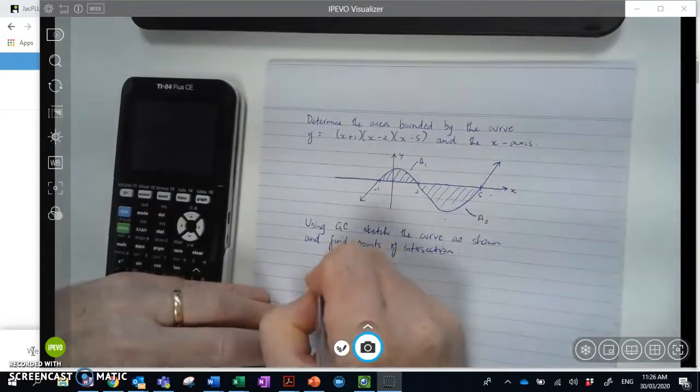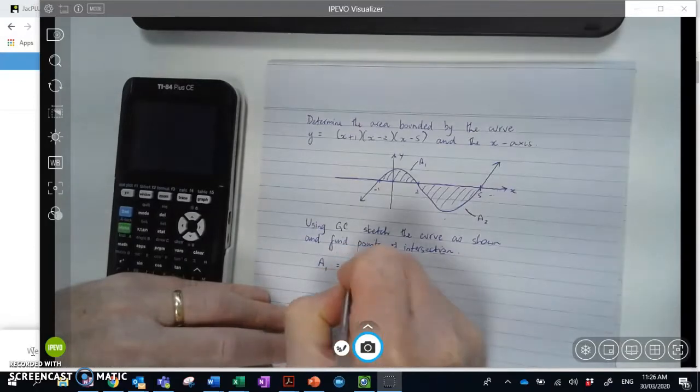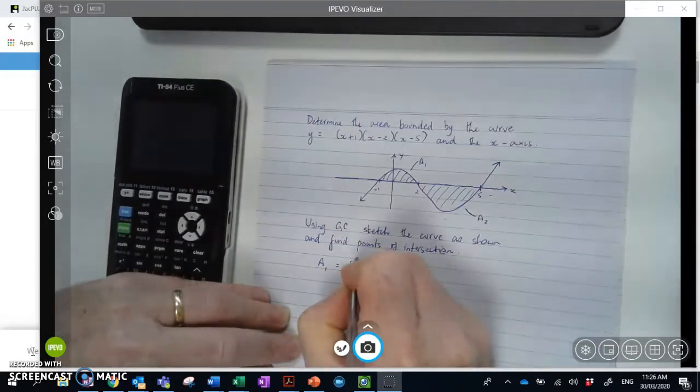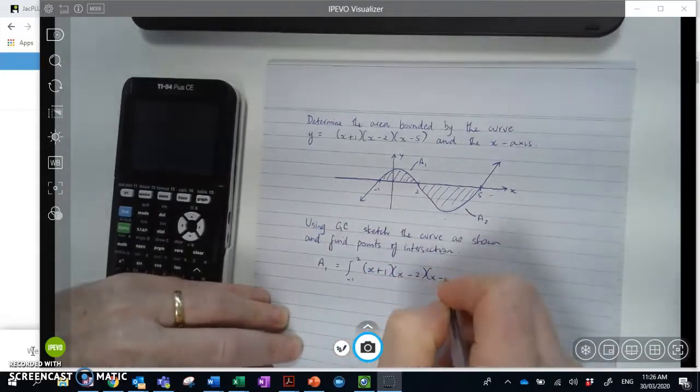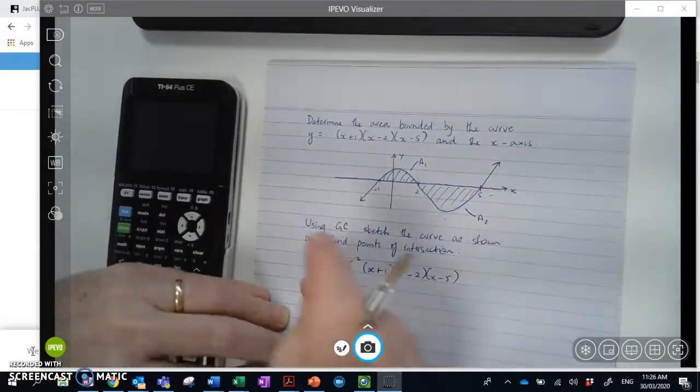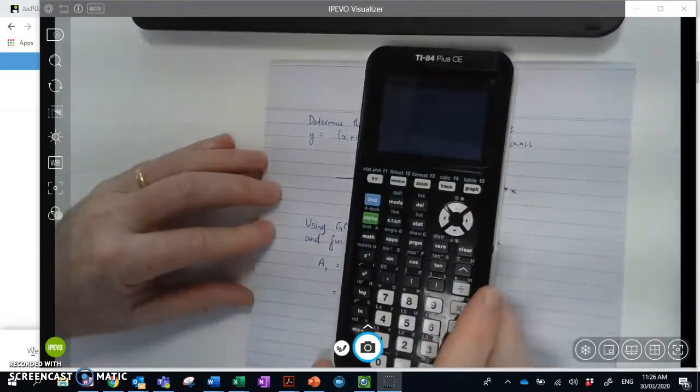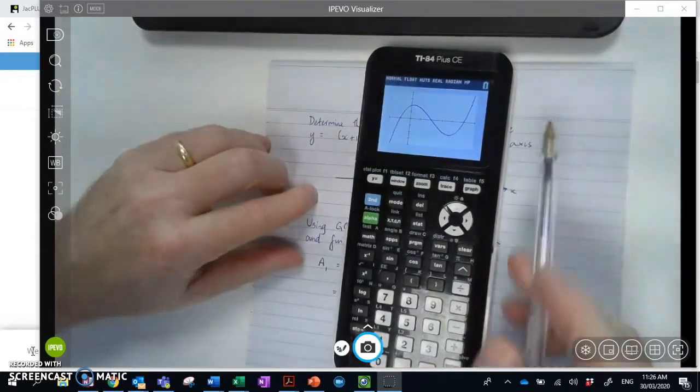And then what we're going to do is we're going to say let's go area 1 as the integral from negative 1 to 2 of this equation, (x+1)(x-2)(x-5). And then we can just place that into the calculator. So I'll show you two ways of doing this. The first is perhaps the easiest.